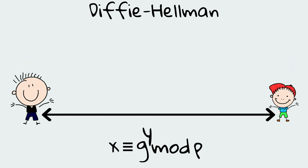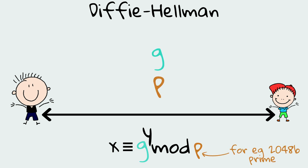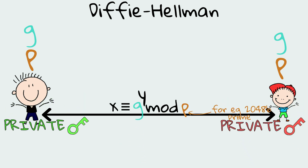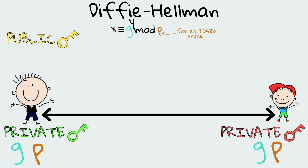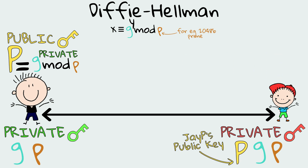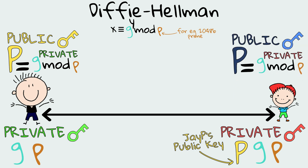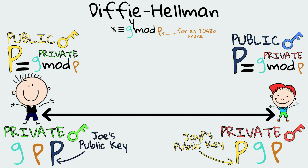First, JP and Joe both agree on two numbers, g and p, a large prime number. Those will be shared over the public internet. Then, each of JP and Joe will generate a random private key which will not be shared over the internet. After that, JP computes his public key using the equation: g raised to the private key mod p, and sends his public key to Joe. Similarly, Joe also computes his public key the same way and sends it to JP. To recap, both parties have shared over the public internet the params g and p and their respective public keys, while the private keys were not shared.